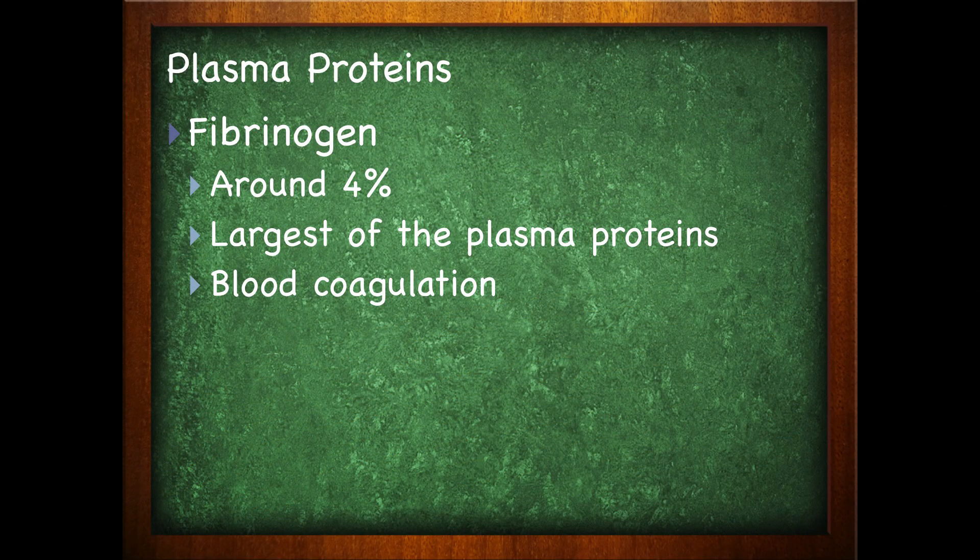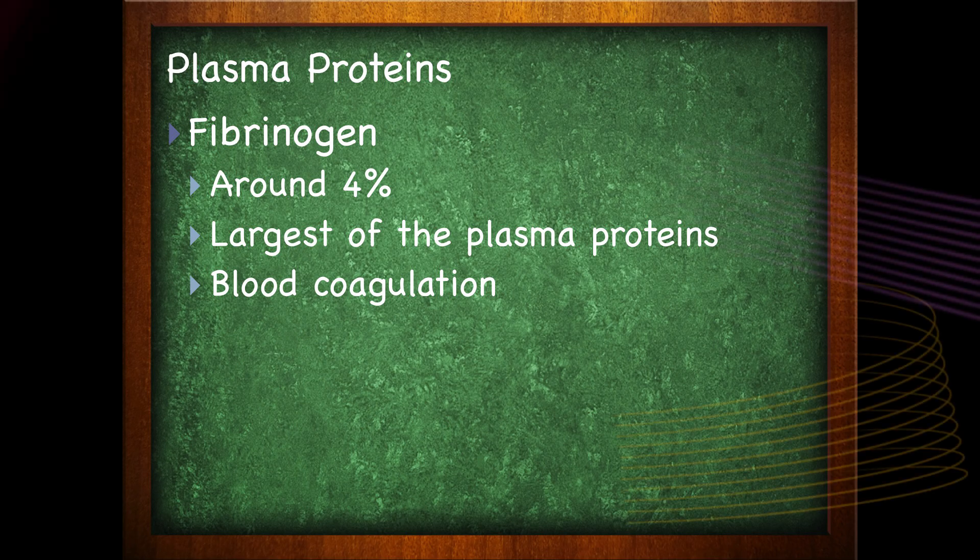The fibrinogens, the other type of plasma protein, only make up around 4% of the plasma proteins. They are the largest in size. So the albumins are the smallest in size but make up the most of the plasma proteins, while the fibrinogens are the largest in size but make up the smallest percentage of the plasma proteins. The fibrinogens deal with something called blood coagulation, which is blood clumping.